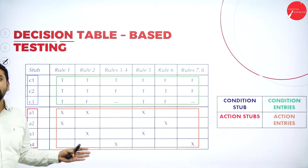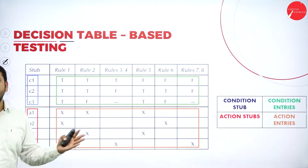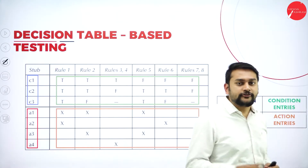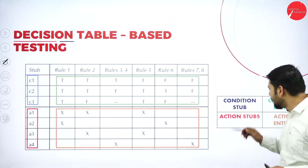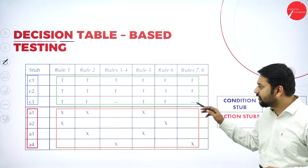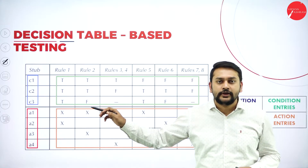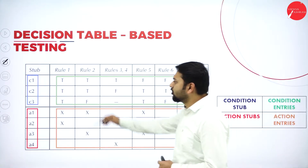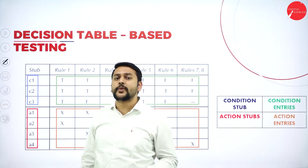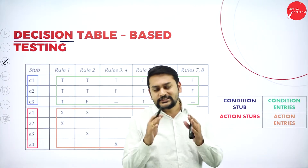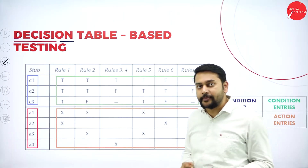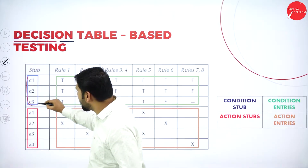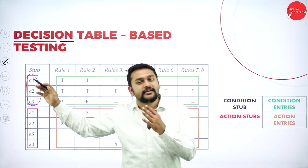This is the decision table skeleton structure that I would like to present. One thing to observe in the slide is the colors I have chosen — I've used the same colors to represent each box. Let's understand this table part by part. This first column I will call a stub. Within this stub, I will have two different types.